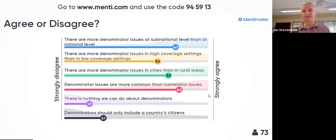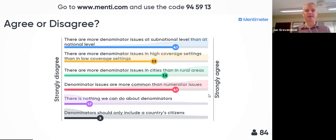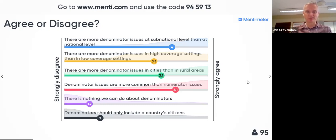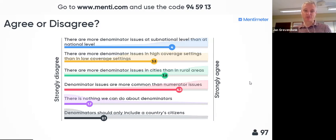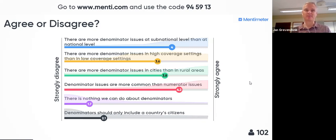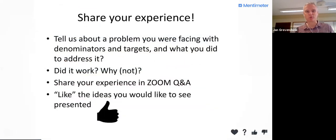Most people think denominator issues are more common than numerator issues — that may be true, but not everything can be explained by denominators; numerator issues are also important. We're happy you don't think there's nothing we can do about denominators. And we think denominators should not only include a country's citizens — they should include everybody who lives in a country, because diseases don't discriminate between someone who lives in a country versus who is a citizen of it.